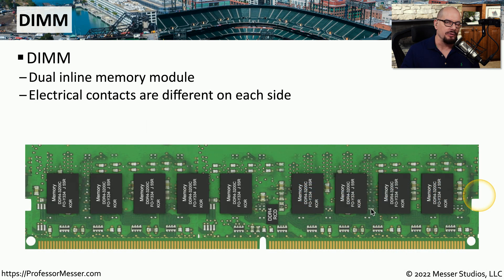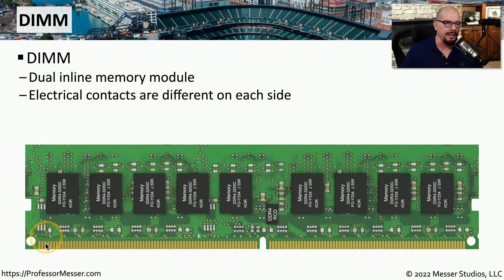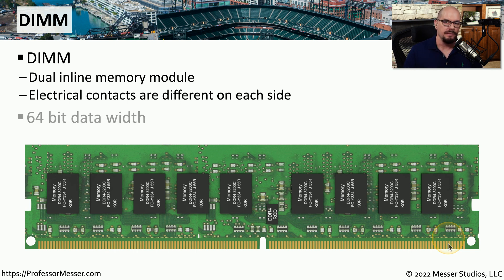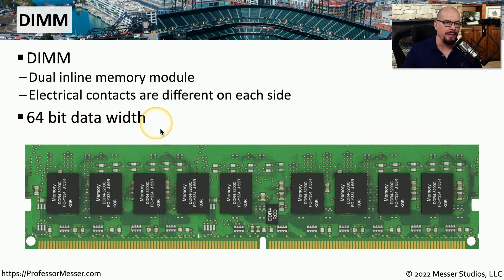What fits into those memory slots is a dual inline memory module, or what we commonly refer to as a DIMM. It's called dual inline because the connectors on one side of the memory module are different than the connectors on the other side. Another common specification is that data is transferred in and out of the DIMM in 64-bit data widths, allowing us to transfer blocks of information to the CPU or storage devices on our system.